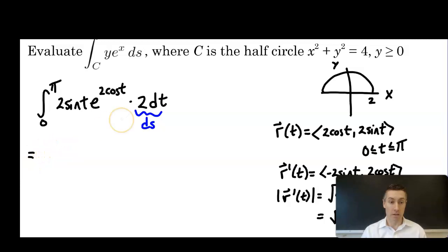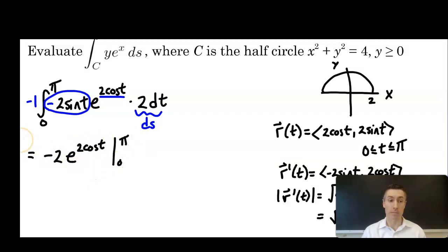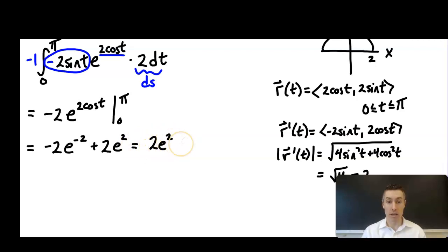We integrate from 0 to π of 2sin(t)·e^(2cos(t))·2 dt. Using u-substitution with u = 2cos(t), du = -2sin(t) dt. We get -2·e^(2cos(t)) evaluated from 0 to π, which gives -2·e^(-2) - (-2·e^2), so the answer is 2e² - 2/e².